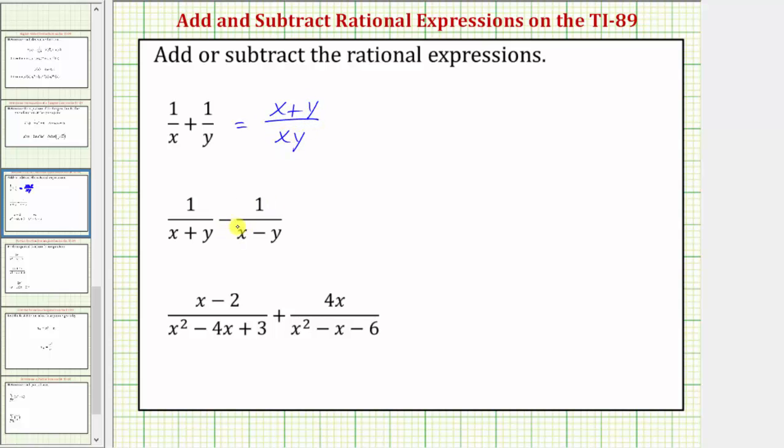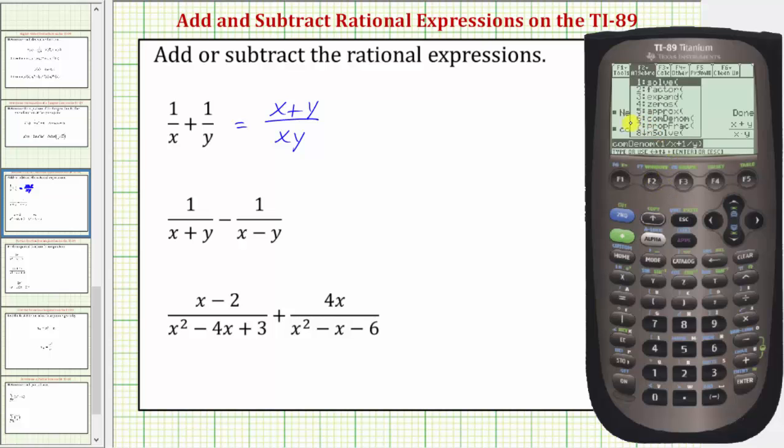And now let's find this difference. So F2 for algebra, number six for common denominator, and now we'll enter one divided by. We will need the denominator in a set of parentheses, so open parenthesis x plus y, close parenthesis,